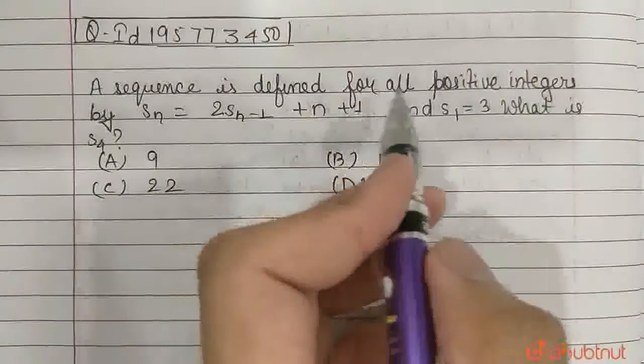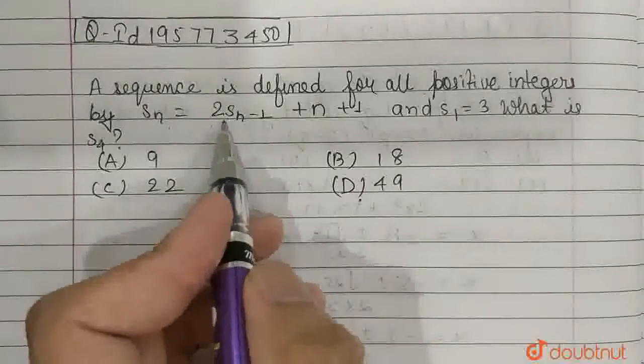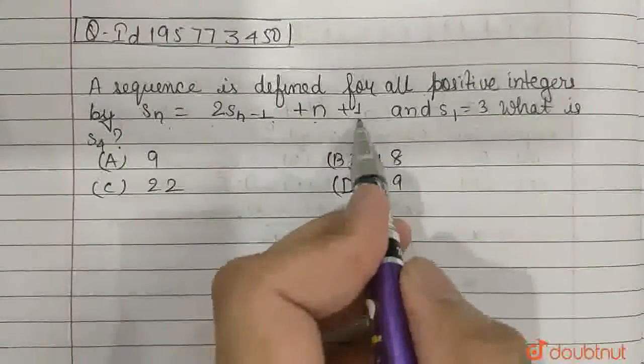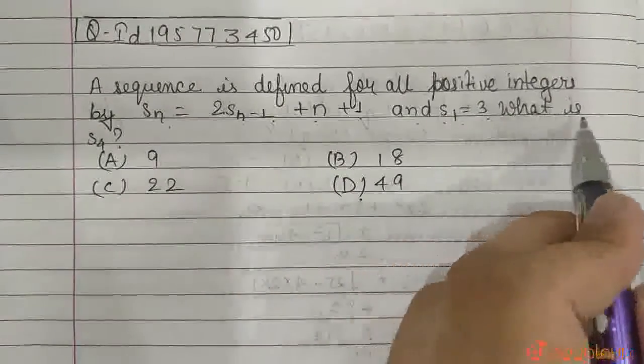A sequence is defined for all positive integers by sn = 2sn-1 + n + 1, and s1 = 3. What is s4?